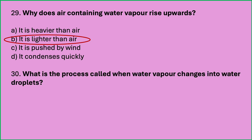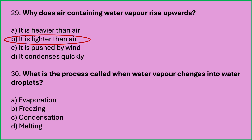What is the process called when water vapour changes into water droplets? Options are: evaporation, freezing, condensation, melting. Which is the correct answer? Condensation. The process by which water vapour changes into water droplets is called condensation.